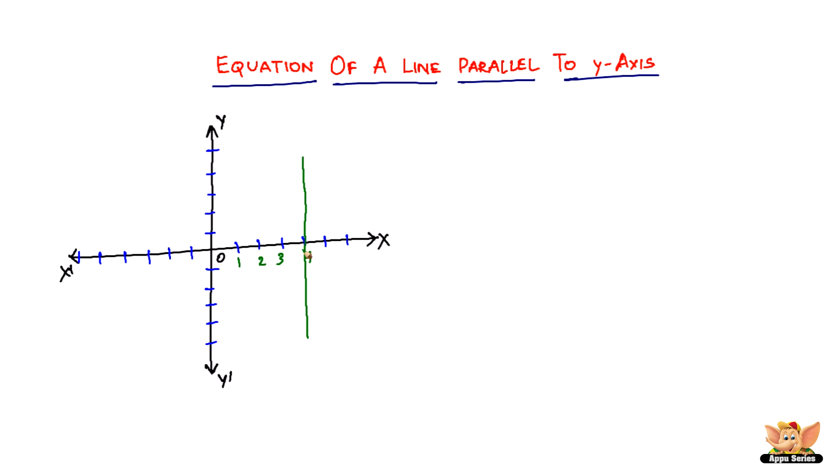The distance from the y-axis is 4, no doubt, but the values are marked on the x-axis. You have to go 4 values on the x-axis. Go to the 4th value on the x-axis, not on the y-axis. No doubt, it is at a distance of 4 units from y-axis, but the equation will be x equals 4, all right?